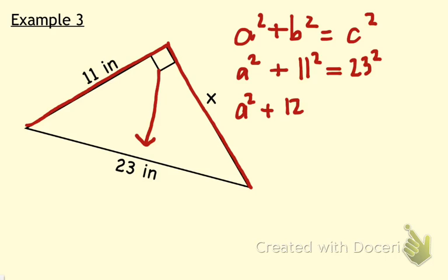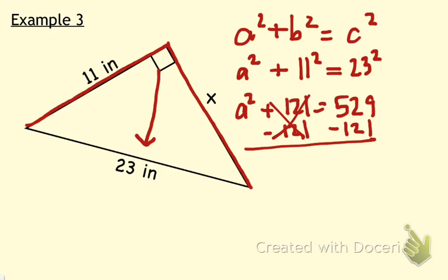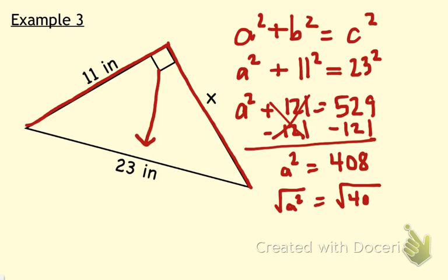11 squared is equal to 121, and 23 squared is equal to 529. Remember, we cannot do any square rooting until our square term is isolated, so we'll do an inverse operation to eliminate plus 121 — we subtract 121 on both sides. That leaves A squared equal to 408. We need to square root both sides: the square root of A squared equals A, and the square root of 408, rounded to the hundredths, is 20.20 inches.